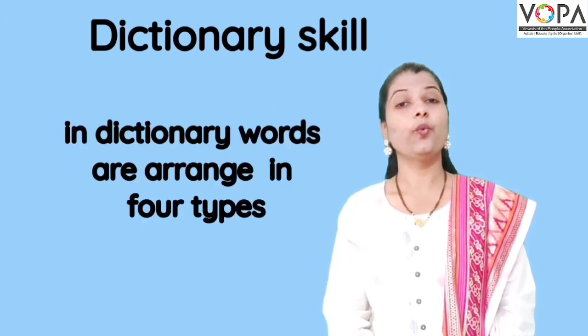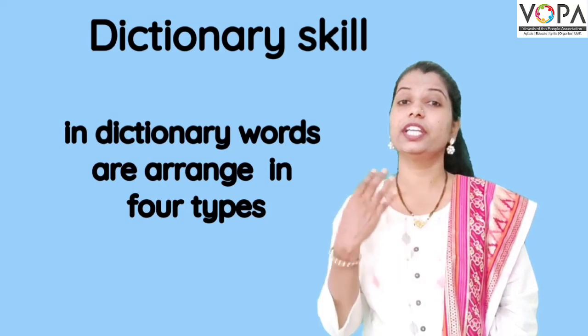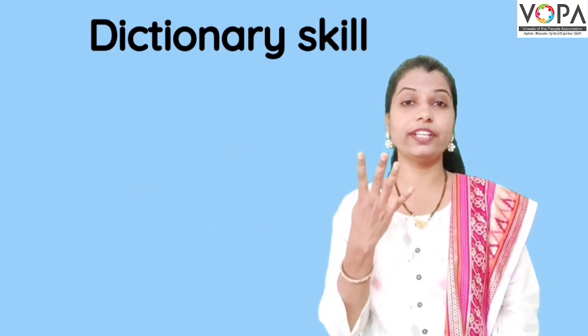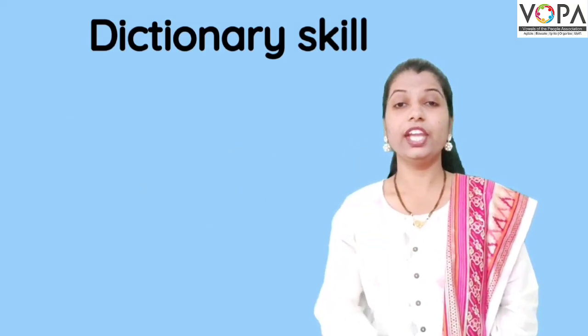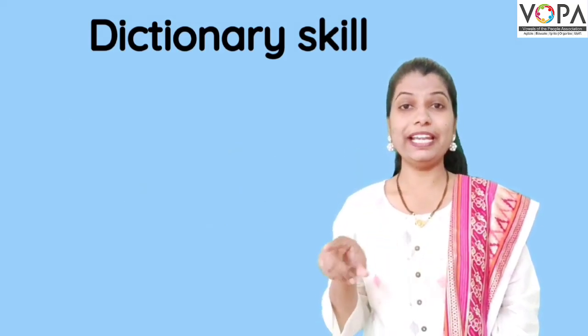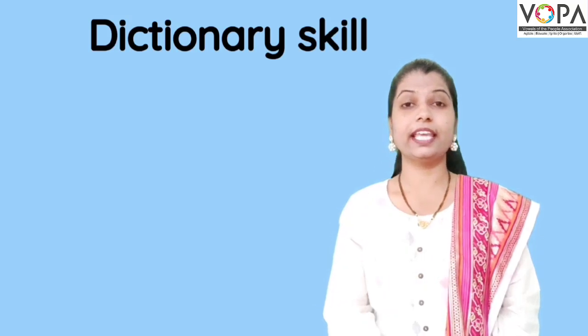In dictionary, words are arranged in four types. Dictionary madhe shabdanche maanye chalpa karke lili astet.